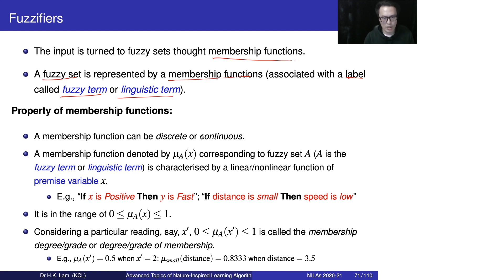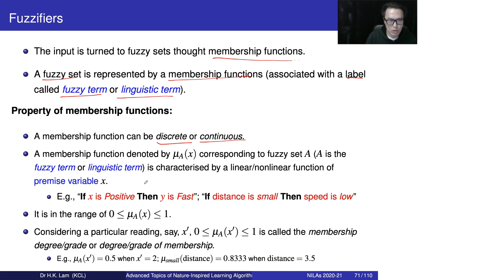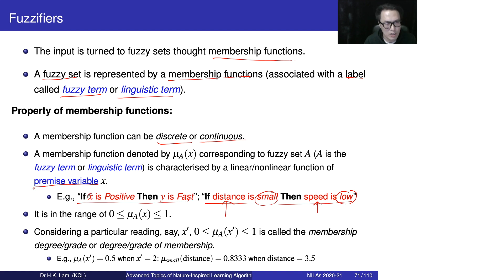The membership function can be discrete or continuous according to our design. When we talk about rules — for example, 'if distance is small, then speed is low' — the variables such as distance and speed are called linguistic variables. Similarly, in another application, 'if x is positive then y is fast' — here x and distance are linguistic variables.